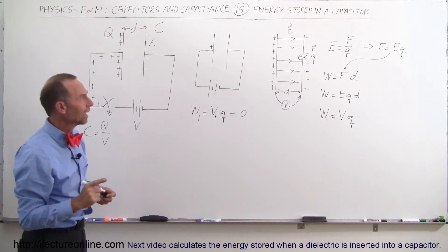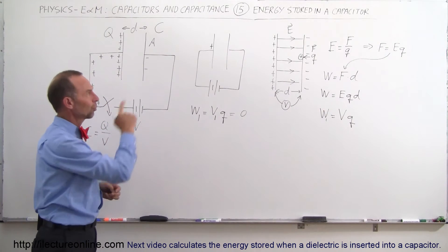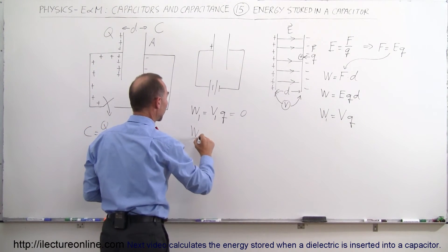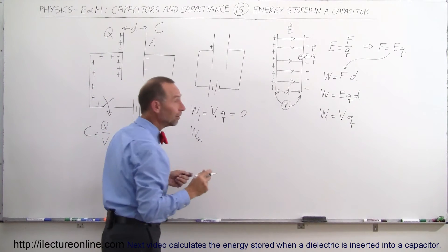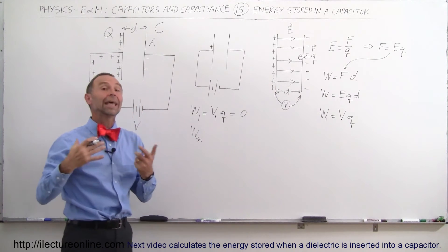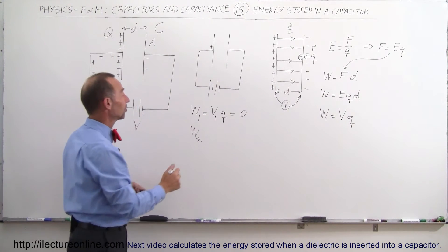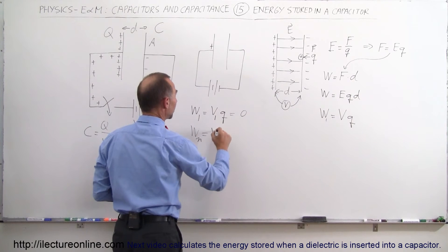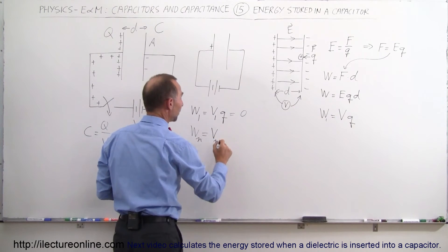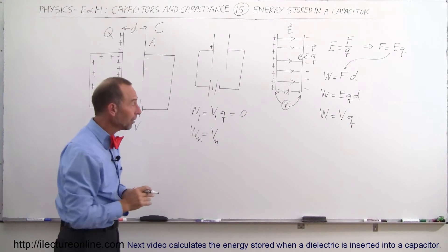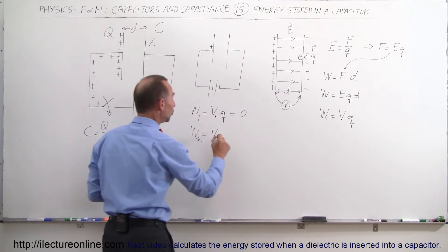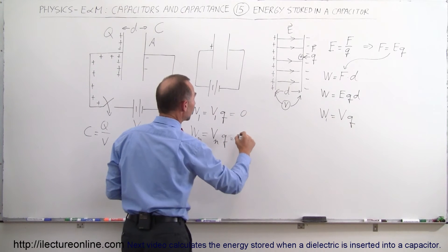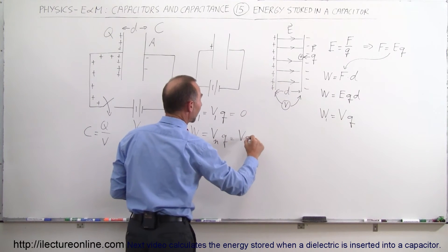How much work does it take to put the last charge on there? Let's call that N — N charges placed onto the capacitor. Well, that's going to be equal to the potential difference when you place the last (Nth) one, times Q. And so that would simply be equal to V times Q — the energy required to put the last charge on there, because at that point the capacitor is basically fully charged and you just place one more additional charge on there.